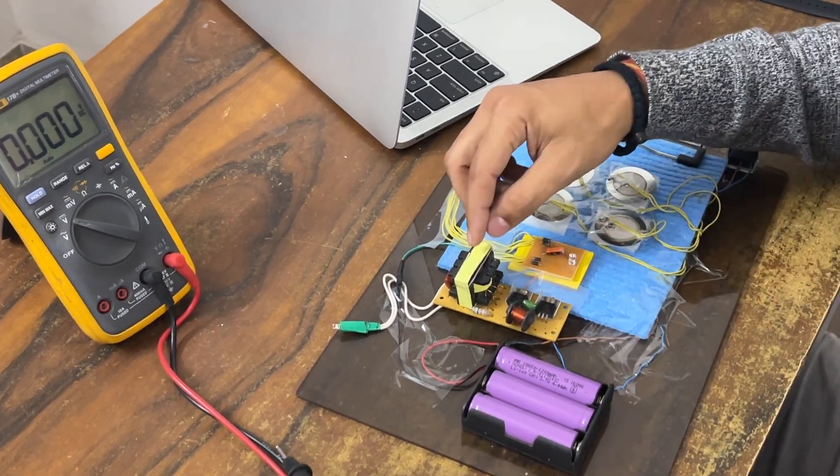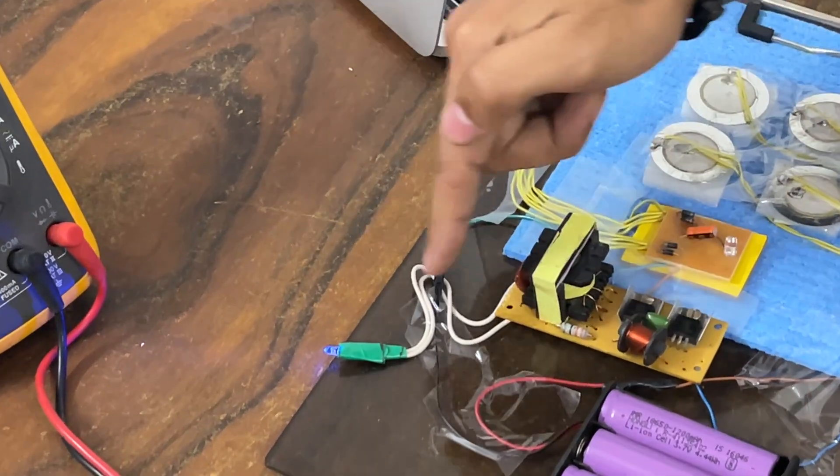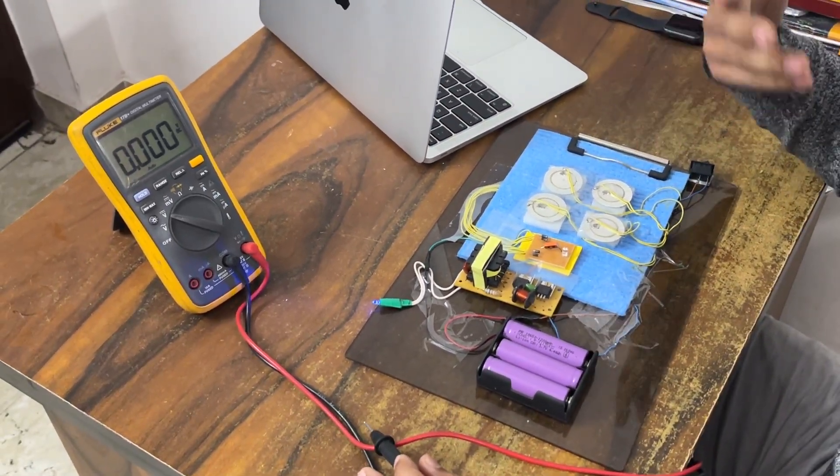Once this is done, DC is converted to AC. Now we can see this also work. This is how we can generate electricity from the footstep.